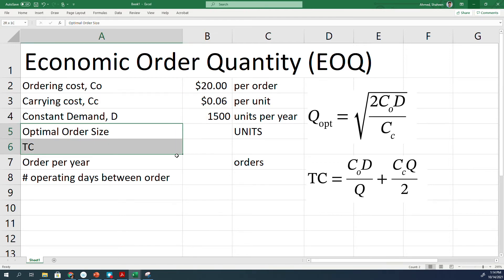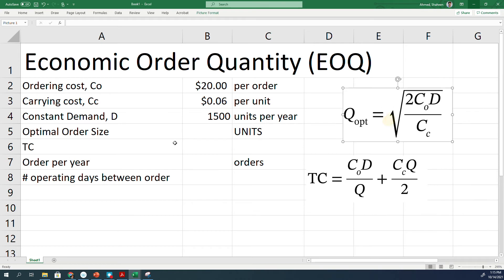And then you typically ask these four questions: What's the optimum size of the order? What's the inventory cost, total inventory cost, and then orders per year, and the number of operating days or number of days between each order that you place. So simply, optimum order size, you're going to use this equation.